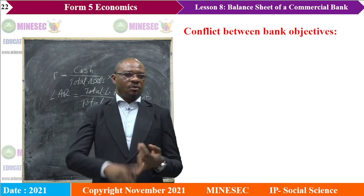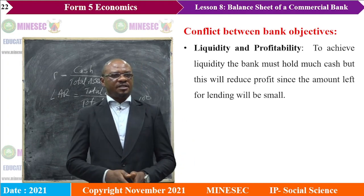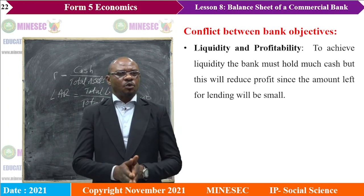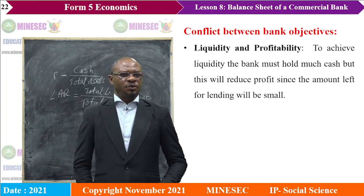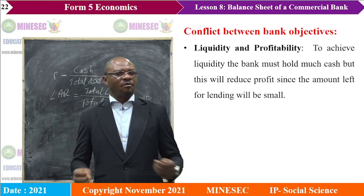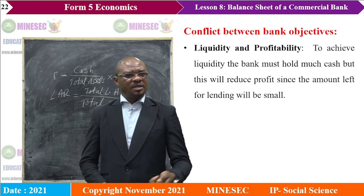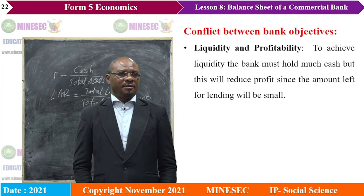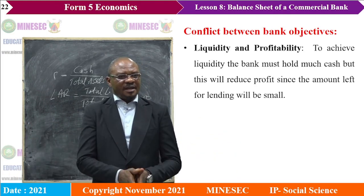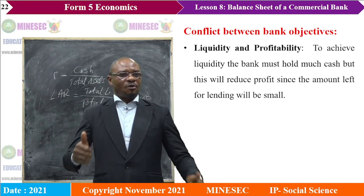These objectives compete with each other. The conflict of liquidity and profitability: to achieve liquidity, the bank must hold much cash, but this reduces the profits since the amount left for lending will be small. If you keep so much cash, you can only give out a small amount as loans, so the interest flowing in will be small and you will not make profit. Conversely, if you want more profit, you give out many loans, leaving very little liquid, and when customers come for money, they will not have it. This is the dilemma the bank faces.